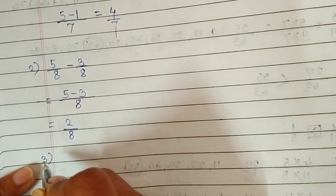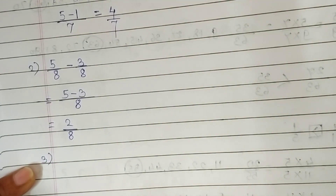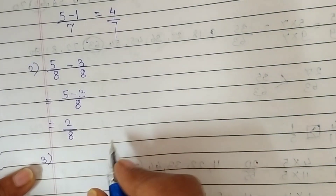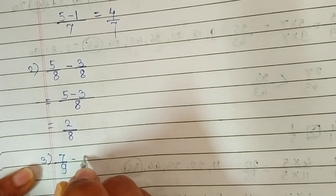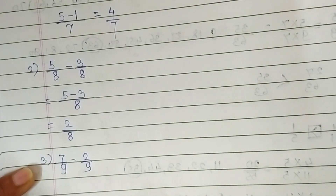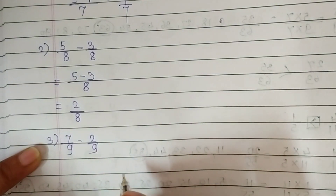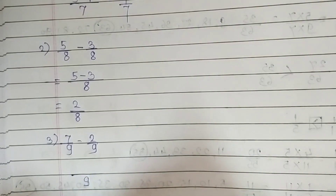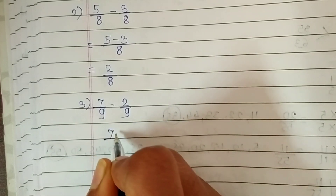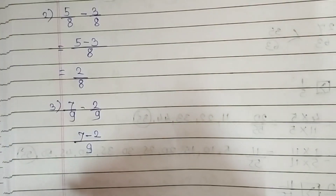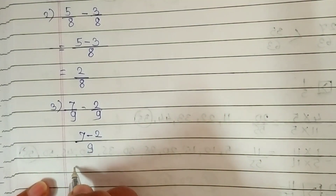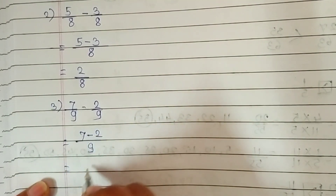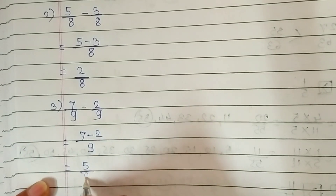The third question is 7 upon 9 minus 2 upon 9. We have denominator 9 — write it as a common denominator, then write the numerators and subtract them. 7 minus 2 is 5, so the answer is 5 upon 9.